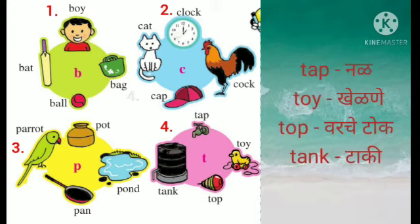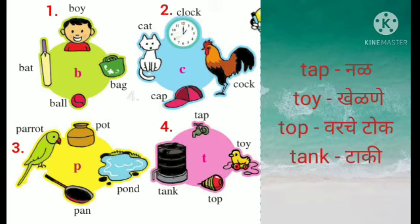Now let's see the fourth circle of the images. Tap — tap manje is nal. Toy — toy manje is khinna. Top — top manje varji baju. Ithe bhoore ji varji baju daako le li ahe. Tank — tank manje paanyeachi taaki. Aplia gharavarti ji paanyeachi taaki aste, ti taaki manjej tank.